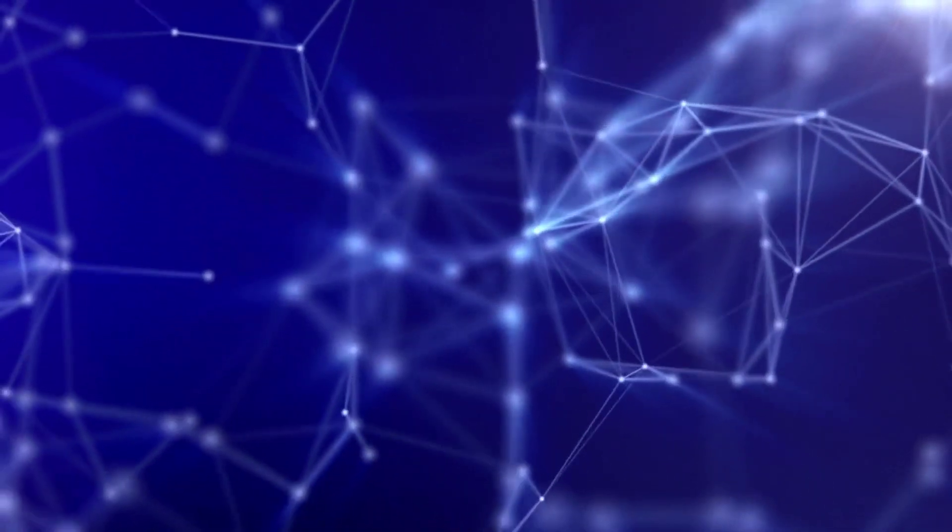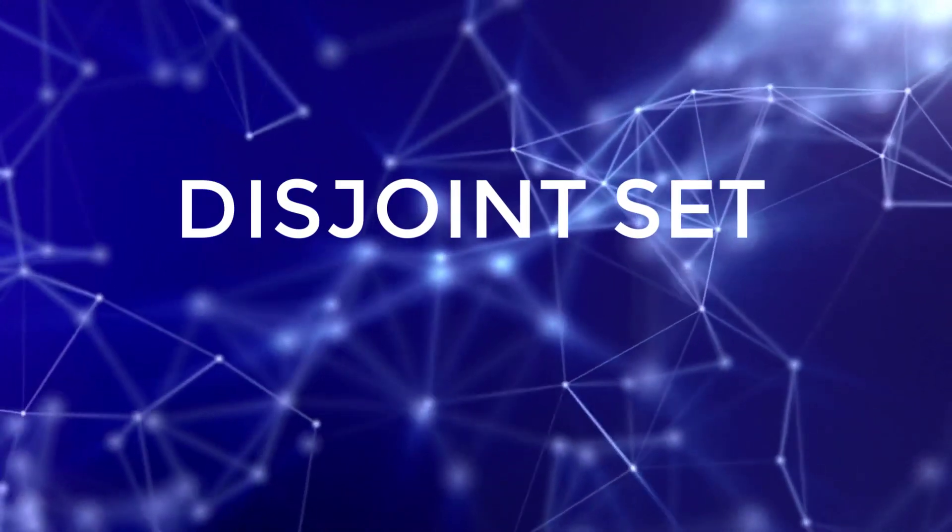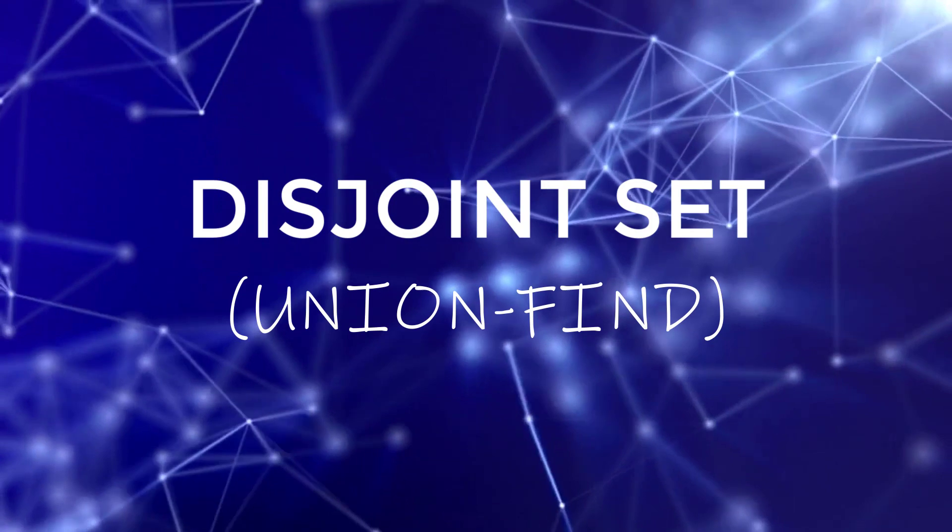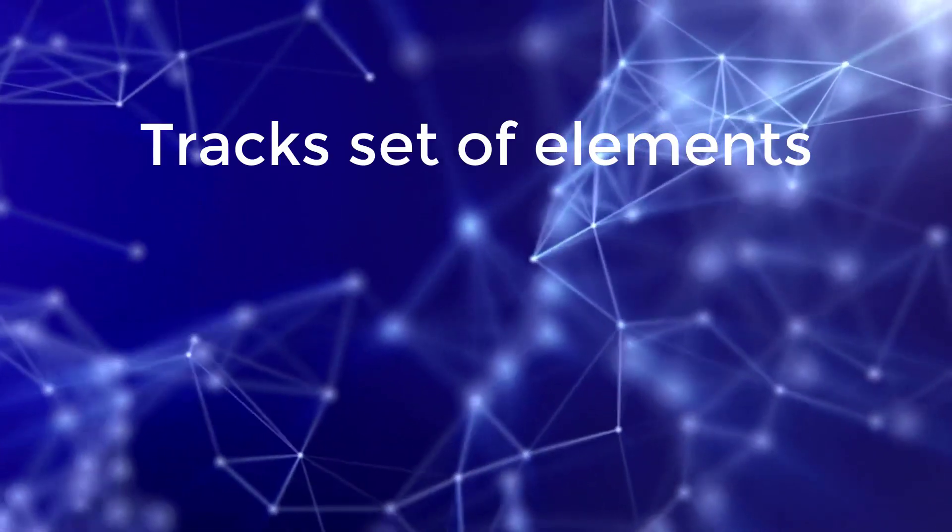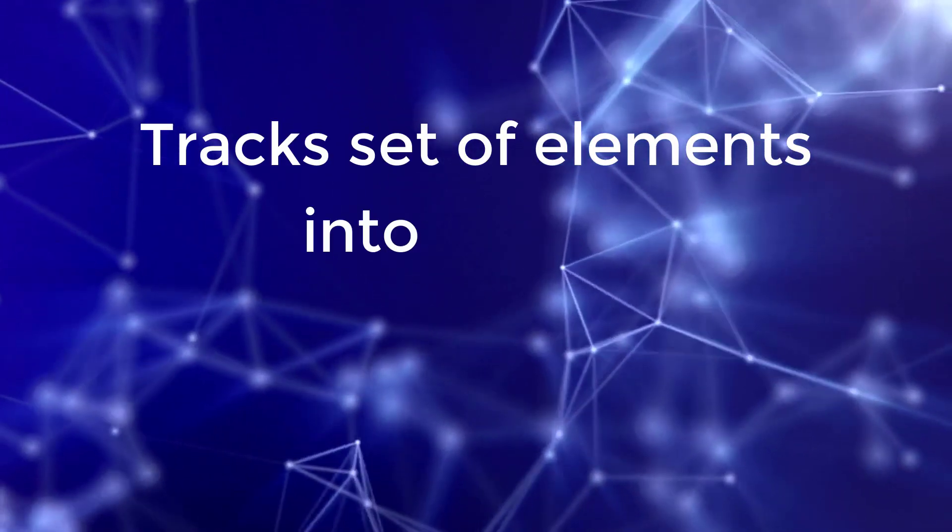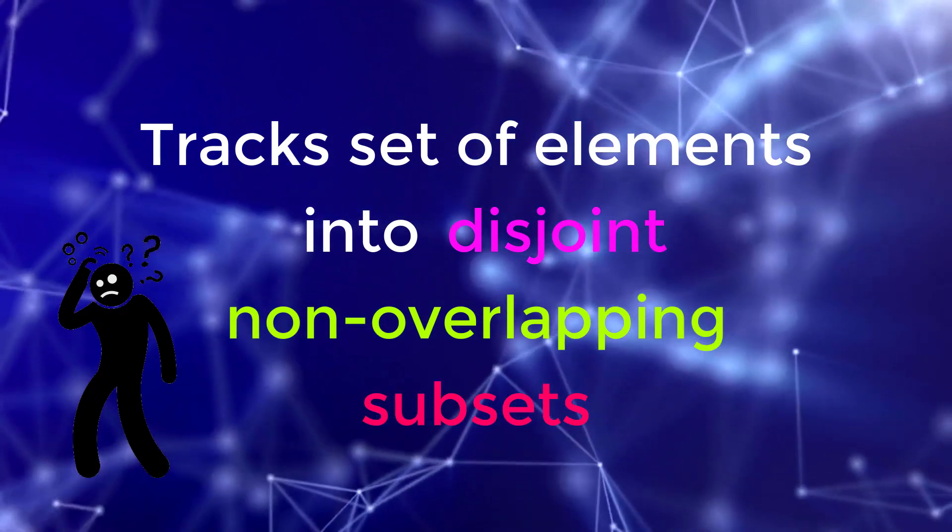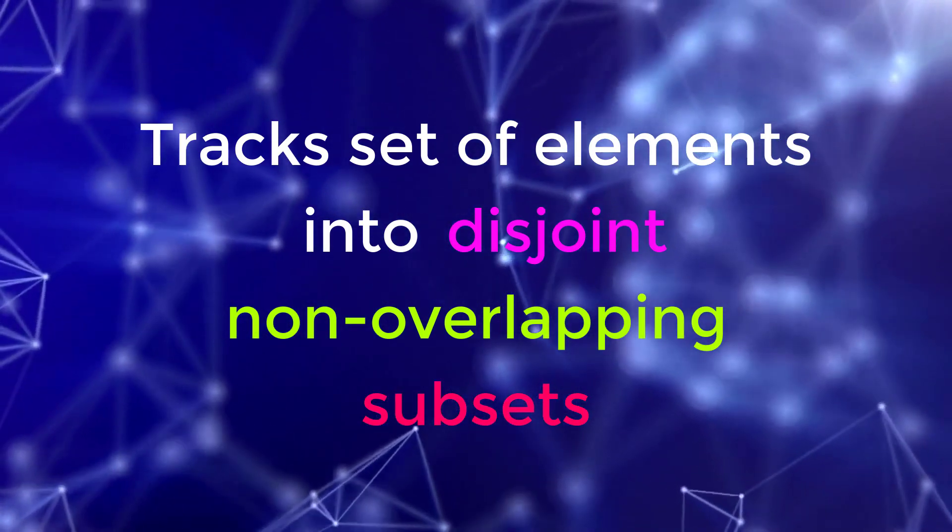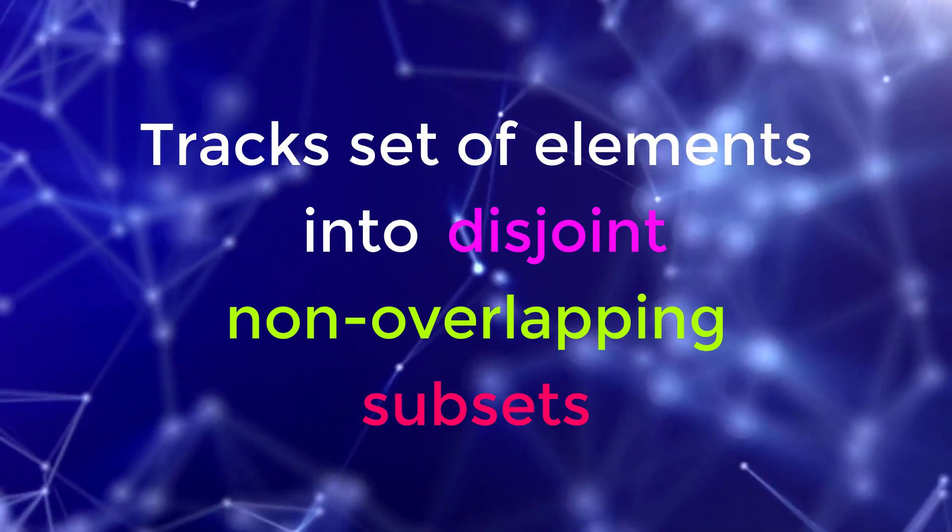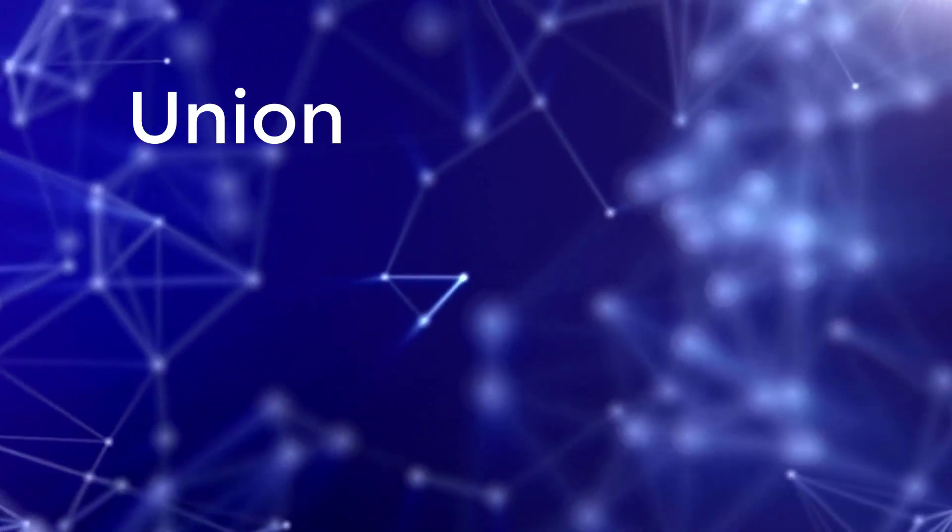Our second data structure is what's known as a disjoint set, which is also known as union find. A disjoint set tracks a set of elements into a number of disjoint non-overlapping subsets. So I know that may sound complicated, but it's really not. All it is, is you have two key functions, which is union and find.